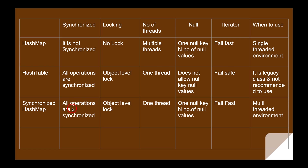Synchronized HashMap also has all methods synchronized and uses object-level lock, allowing only one thread at a time. The key difference from HashTable: HashTable does not allow null keys and null values, whereas synchronized HashMap allows one null key and any number of null values. Also, HashTable returns a fail-safe iterator, whereas synchronized HashMap returns a fail-fast iterator — so synchronized HashMap will throw ConcurrentModificationException if you try to modify while iterating. Synchronized HashMap is recommended for use in multi-threaded environments when required.